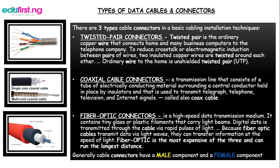Coaxial cable connectors: a coaxial cable is a transmission line that consists of a tube of electrically conducting material surrounding a central conductor held in place by insulators. It is used to transmit telegraph, telephone, television, and internet signals, and is also called a coax cable.